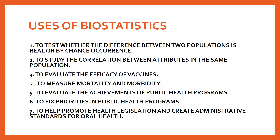The next use is to study the correlation between attributes in the same population. When selecting a population for study, you find various variables - the age of the patient, some disease, or the amount of sugar given. These are various attributes in the same population, and you study the correlation between those attributes. Next is to evaluate the efficiency of vaccines.